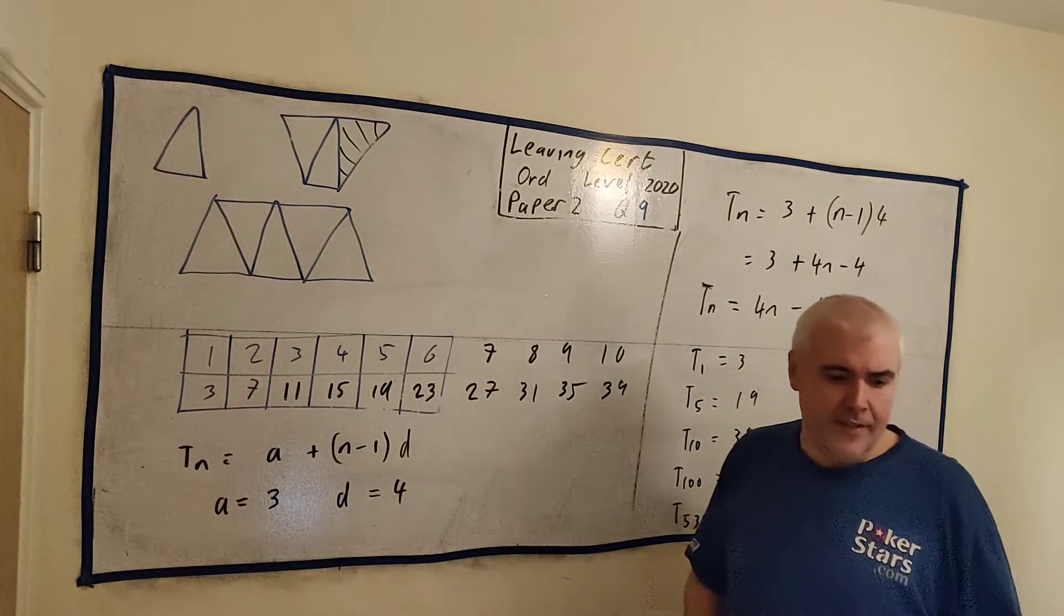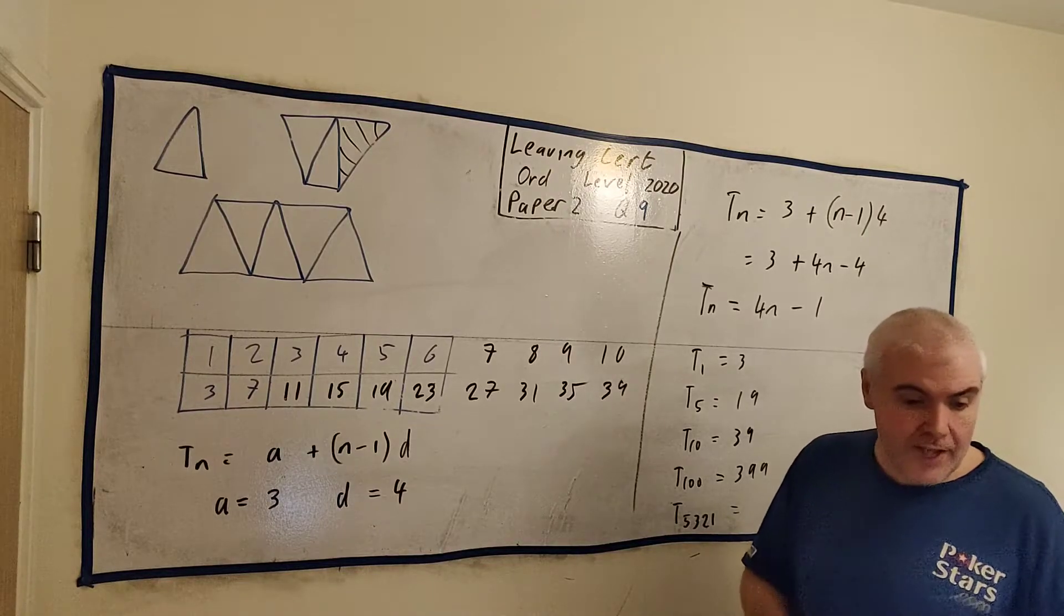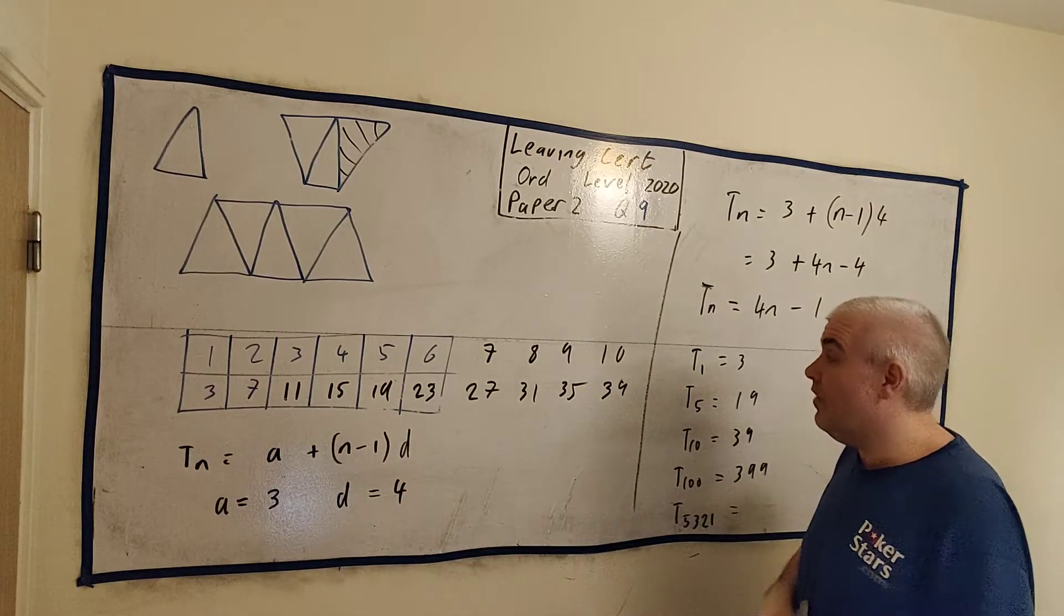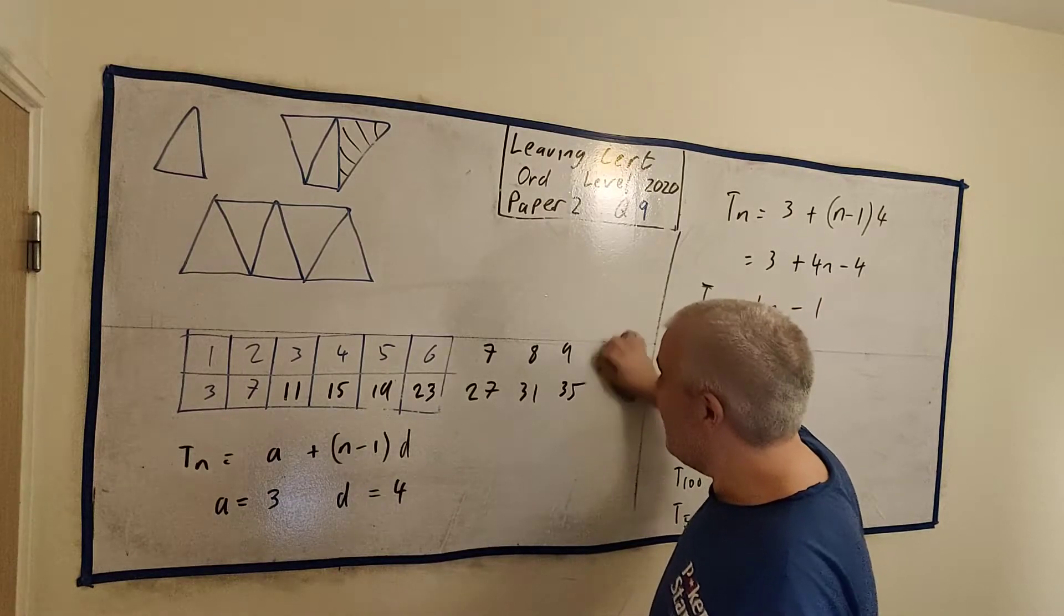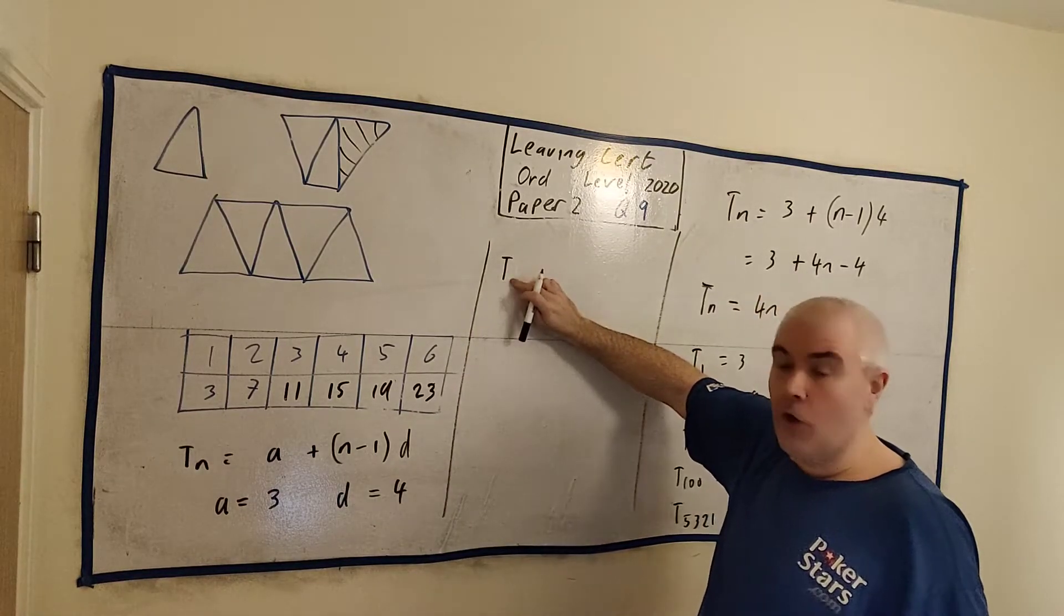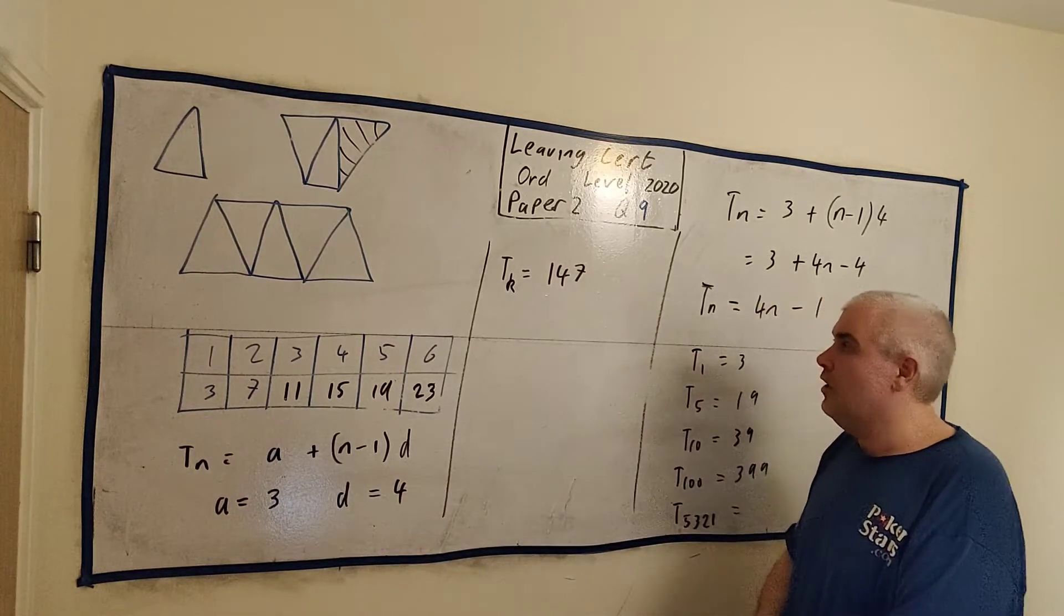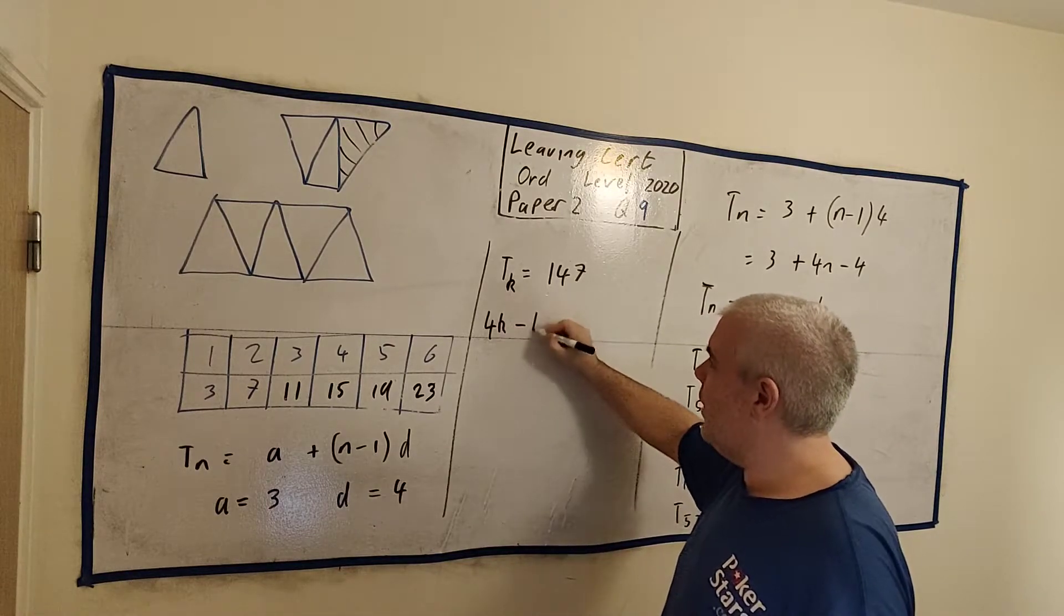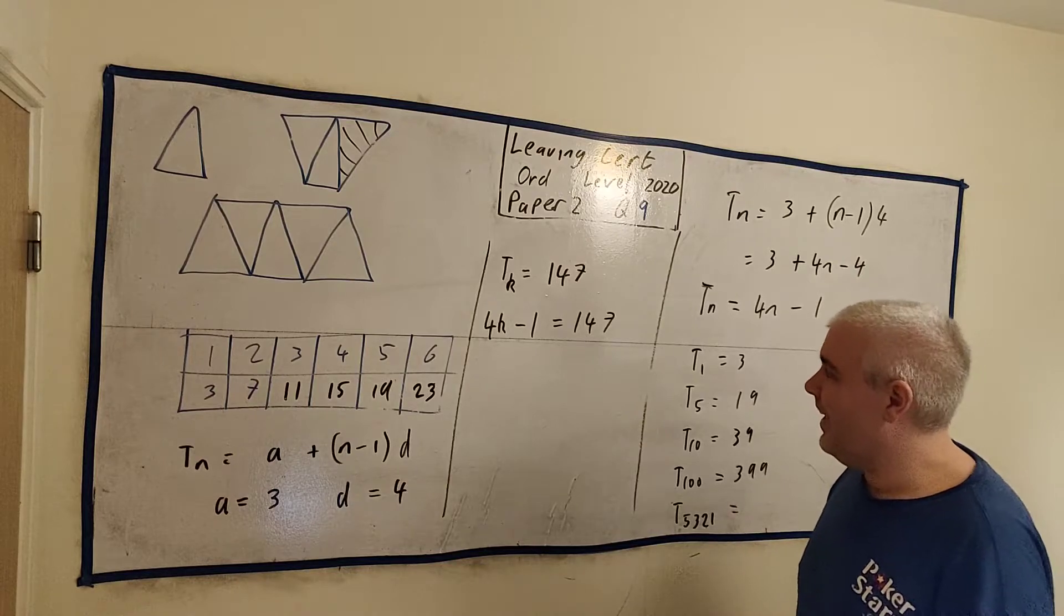The next part then tells us that there's a pattern K that has 147 matchsticks. Students got confused on this, and pattern K basically means one of these numbers is going to be 147. That's all. What is that number? When I say it like that, students find it much easier. They can start guessing. But here's a better way. T, a number we don't know, so we'll just put K there, is equal to 147. But I know everything about T. T number is just 4 times the number minus 1. So that's just saying 4K minus 1 must equal 147. And we can just solve this now.